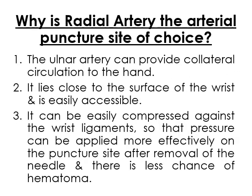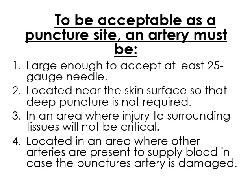Why is the radial artery the puncture site of choice? Because the ulnar artery can provide collateral circulation to the hand. It is close to the surface and easily compressed against the wrist ligament so pressure can be applied more effectively, and there is less chance of hematoma. To be acceptable as a puncture site, the artery must be large enough to accept at least a 25-gauge needle, located near the skin, with no injuries to surrounding tissue, and located in an area where other arteries are present to supply blood.